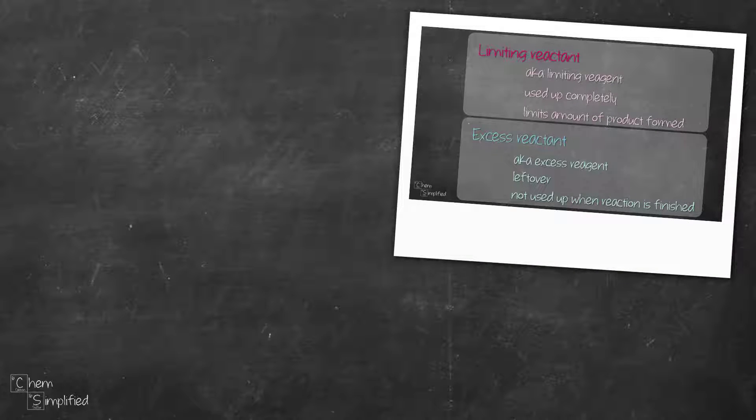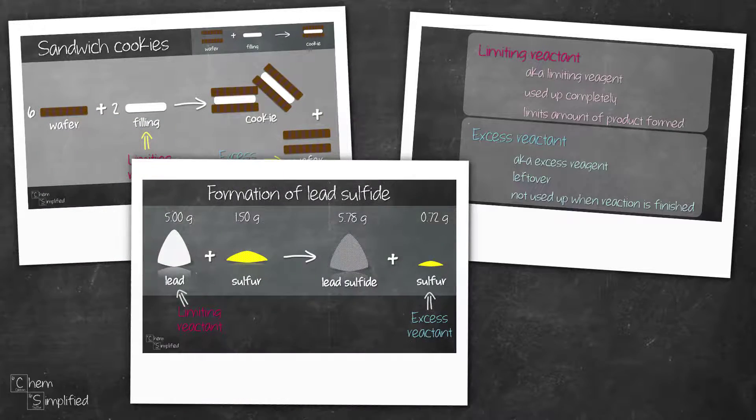In this video, we're going to look at what is limiting reactant and what is excess reactant. We're going to use two examples. One is formation of sandwich cookies and another one is lead sulfide.